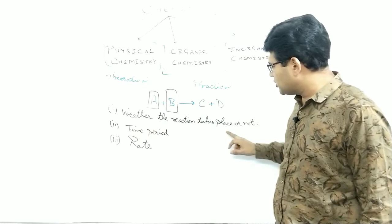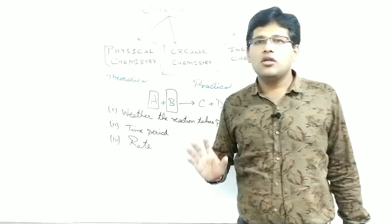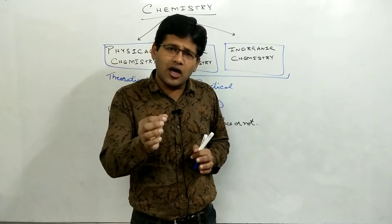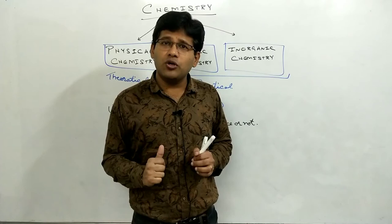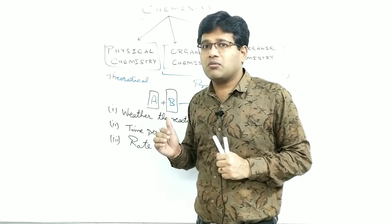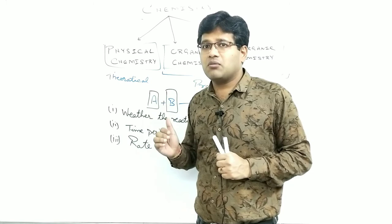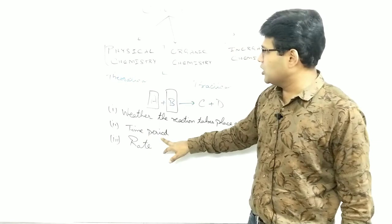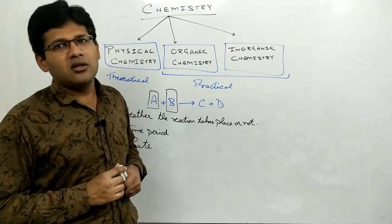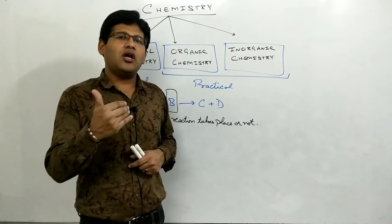Whether the reaction takes place or not — this is what physical chemistry tells us theoretically. Similarly, time period of reaction — अगर reaction 5 hours में होती है और आप 3.5 hours में रोक देते हैं तो reaction complete नहीं होगी. Physical chemistry पहले ही approximate time period बता देती है. Rate of reaction — whether it is very fast, fast, slow, very slow, or at moderate speed — वो भी physical chemistry बताती है.